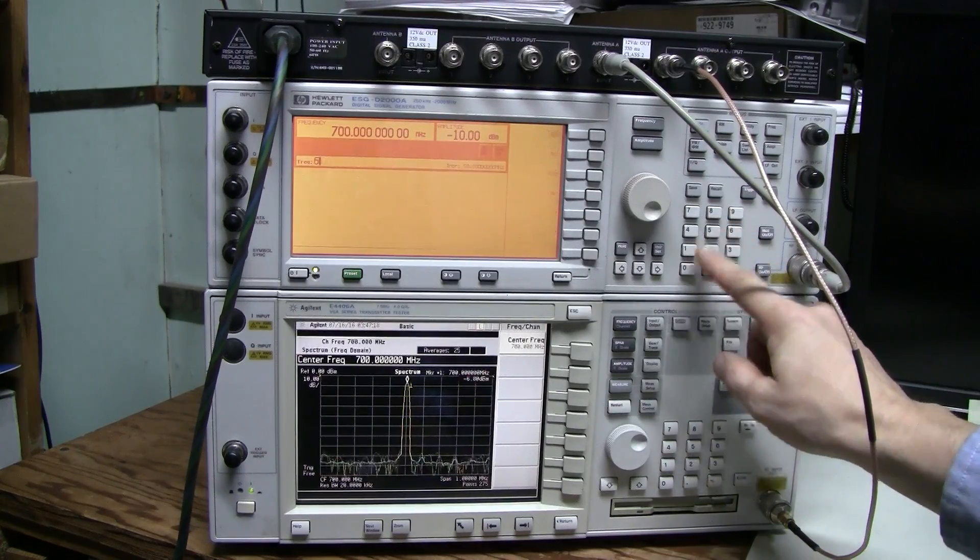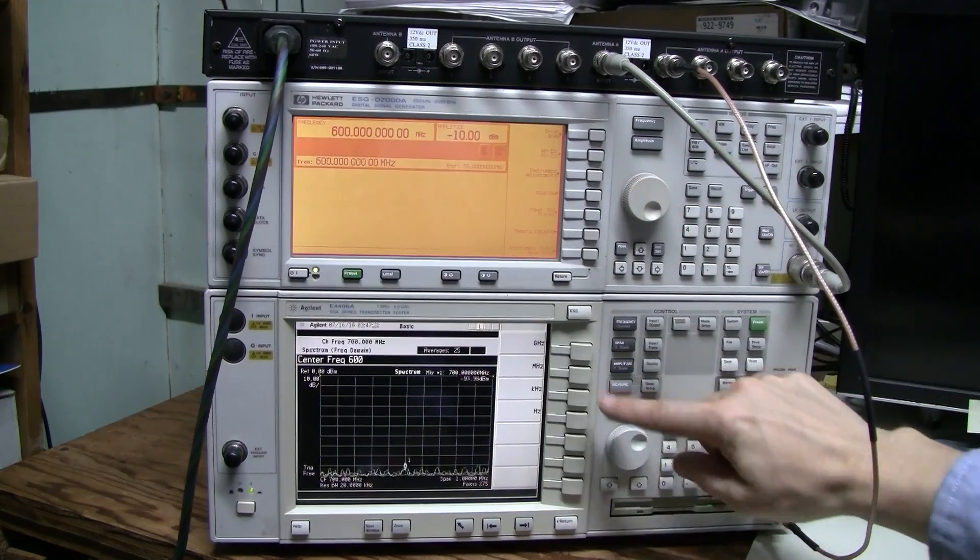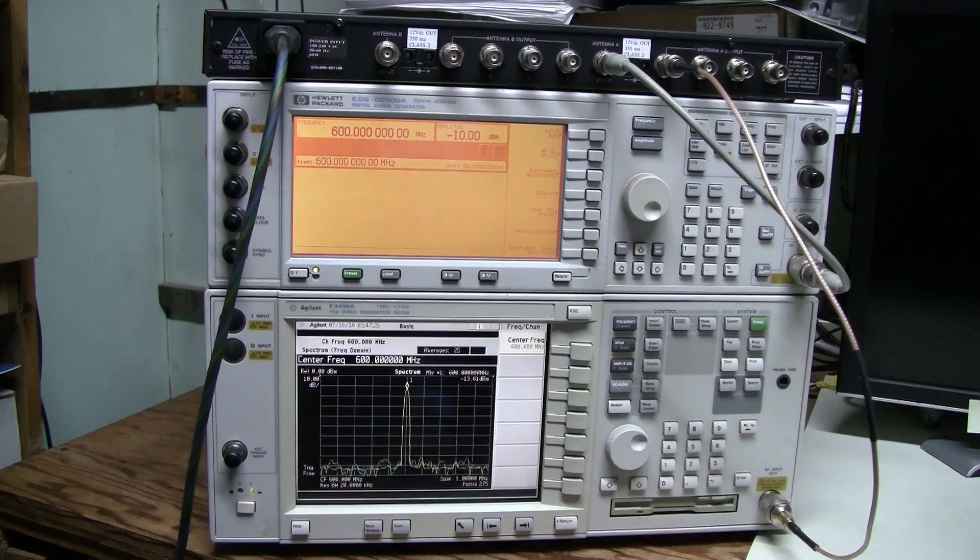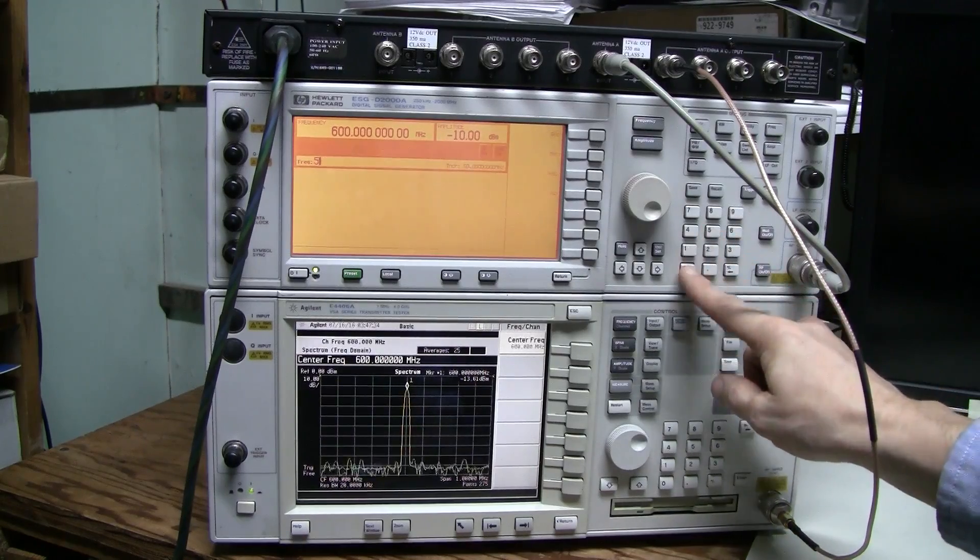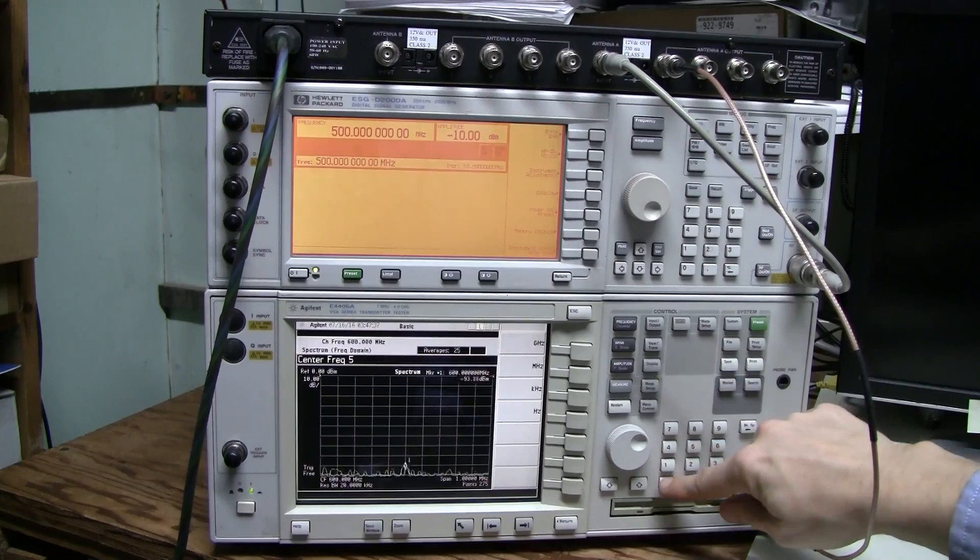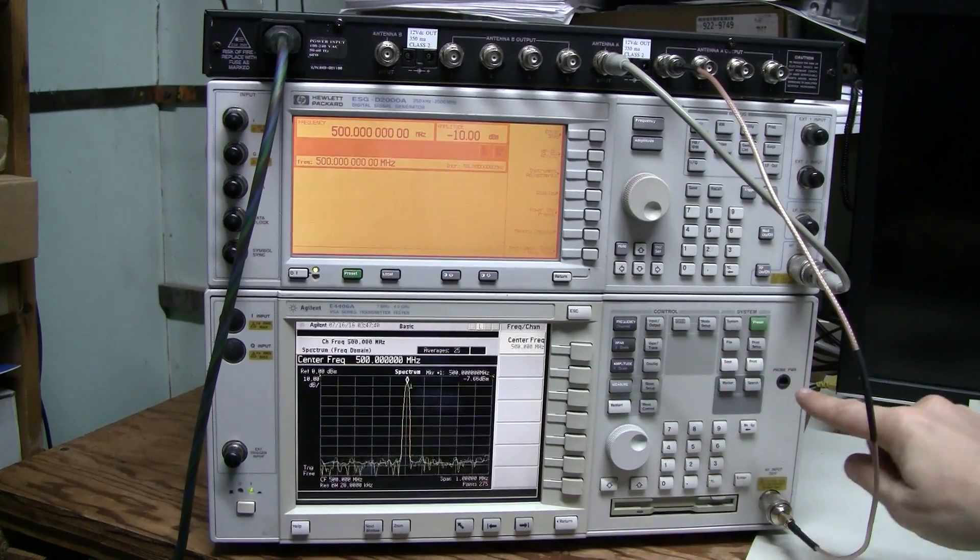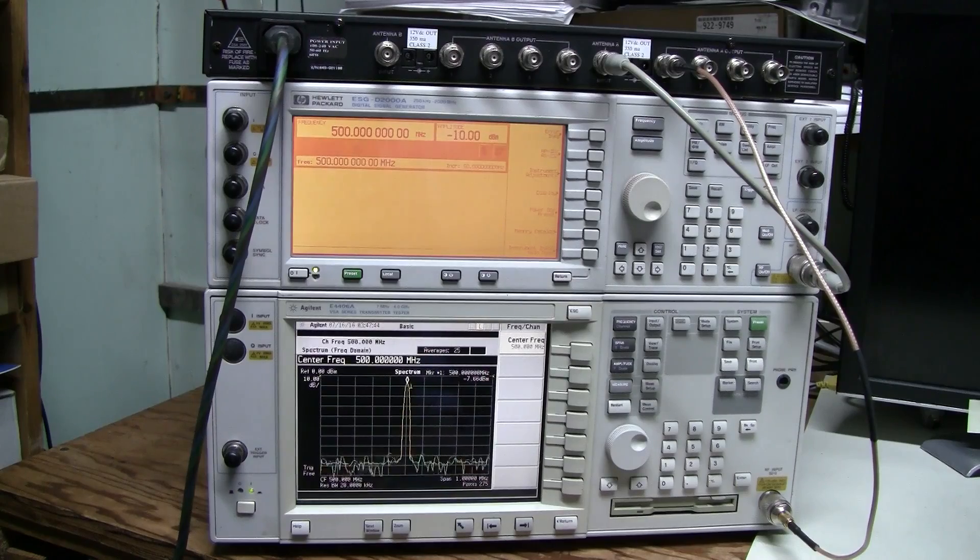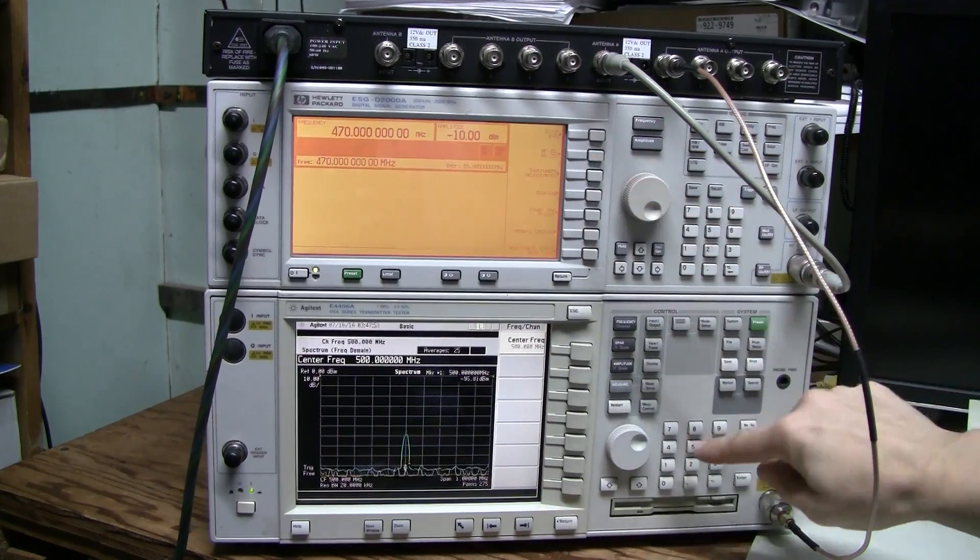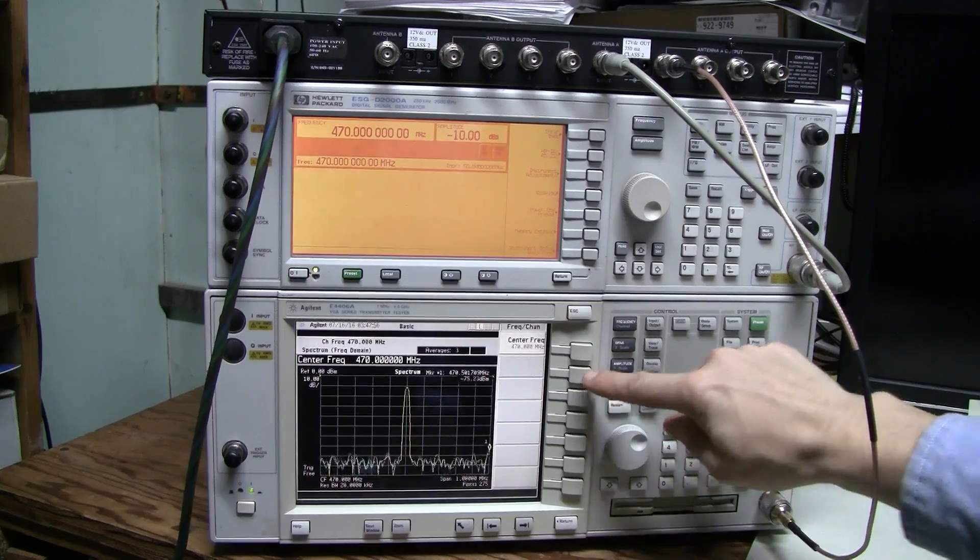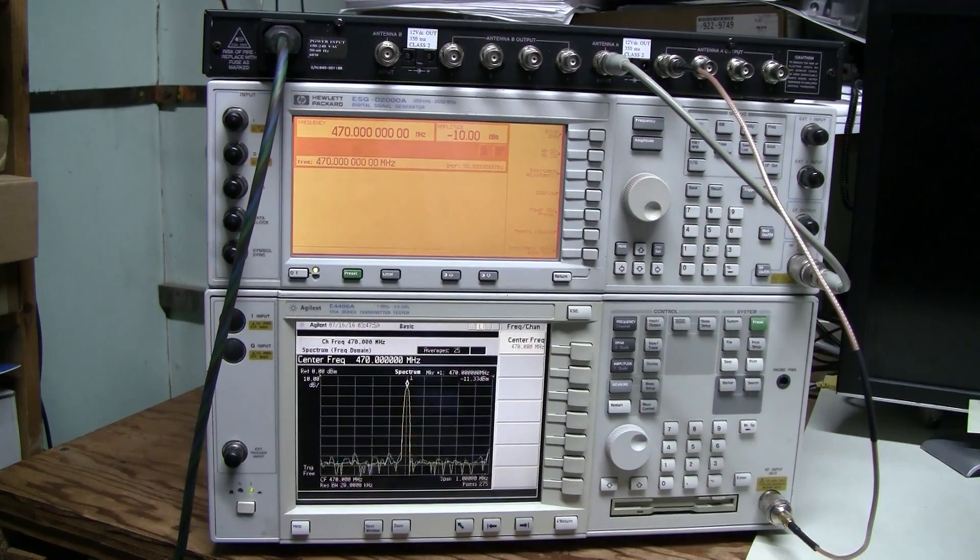Let's go even lower to 600 MHz. And the result is minus 13.6. This is not very good. But let's go even lower. 500 MHz. Oh, this is better. Minus 7.6. So, let's try the minimum we want. That's 470 MHz. And here we have minus 11.3 dBm output.